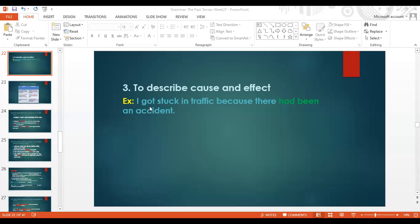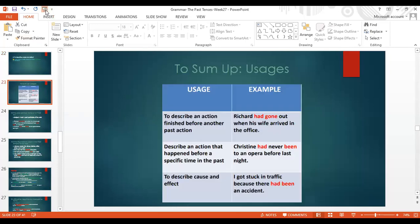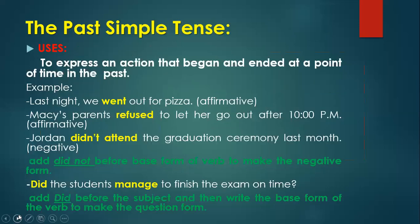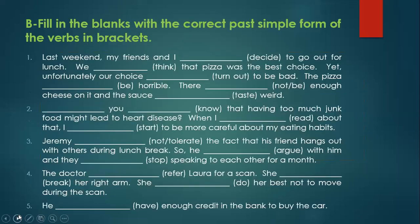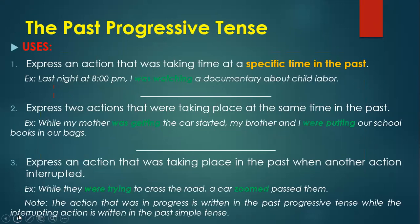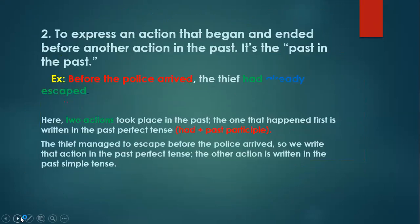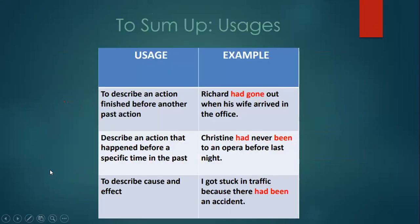We're going to continue from where we stopped. The third usage is to express the cause-and-effect relationship. Again: I got stuck in traffic because there had been an incident. Here is a summary of the three usages: I use the past perfect tense to describe an action that finished before another action, or before a specific point in time, or to describe a cause-and-effect relationship.